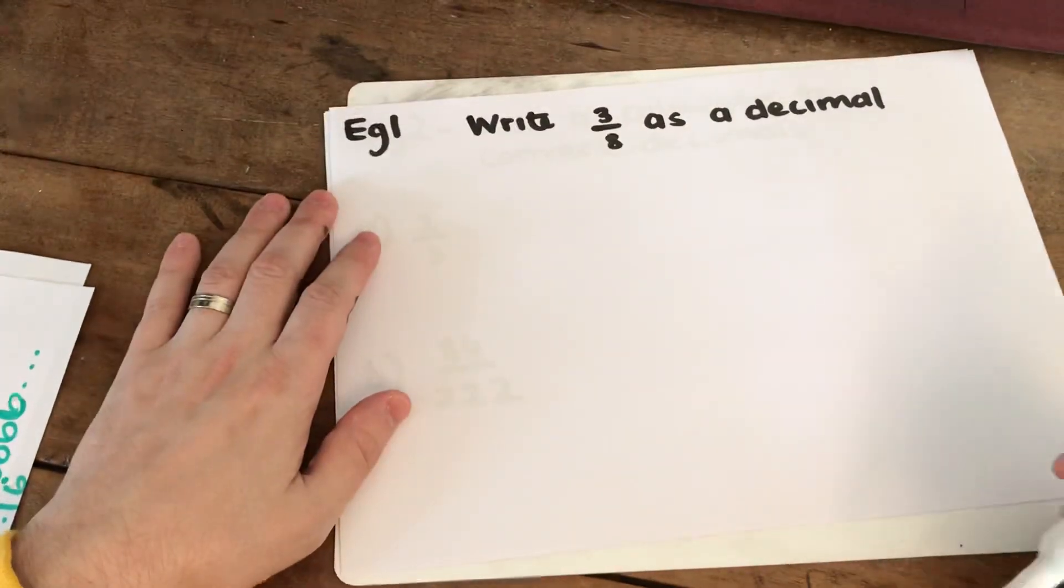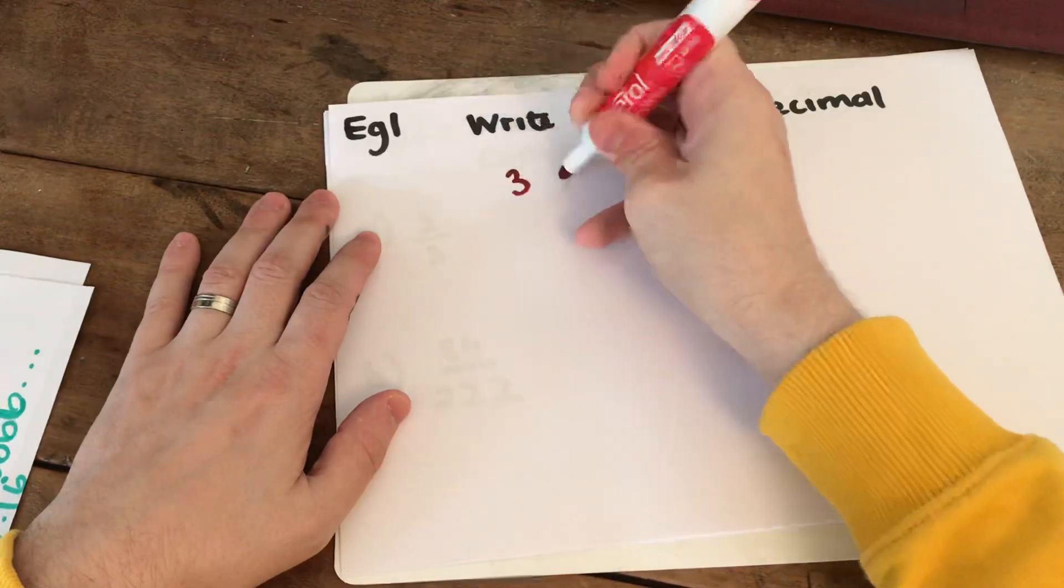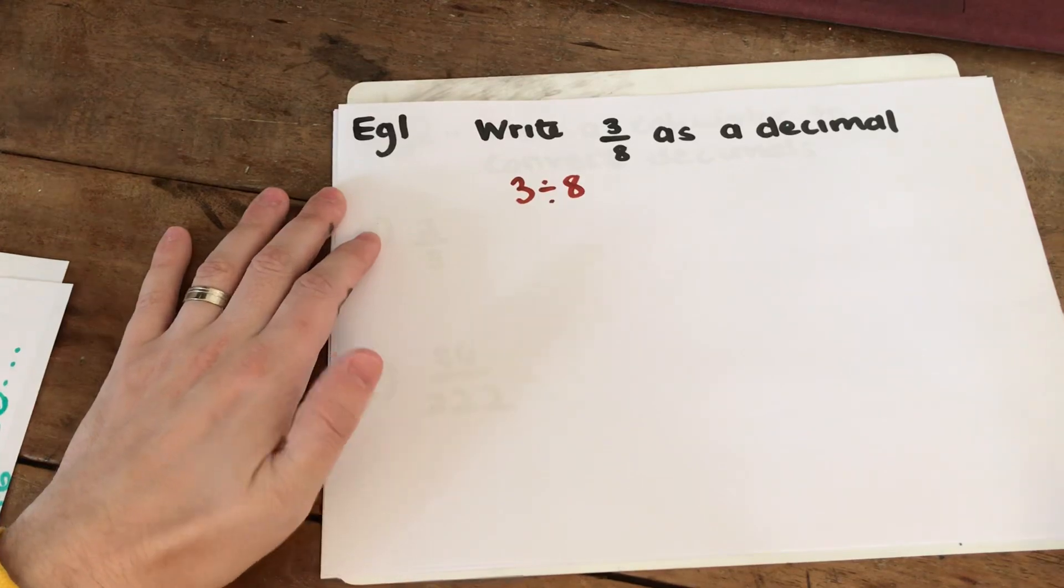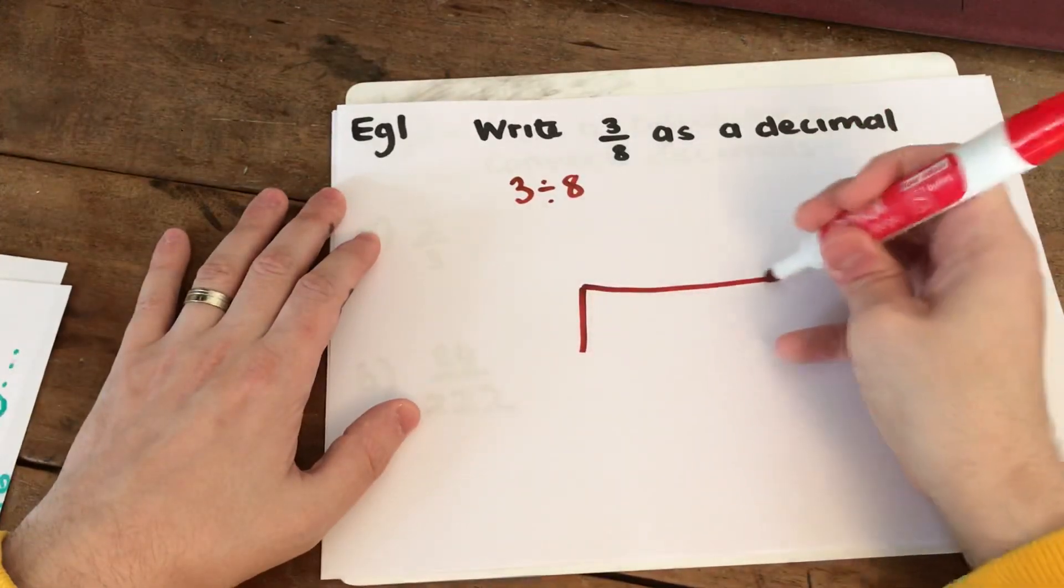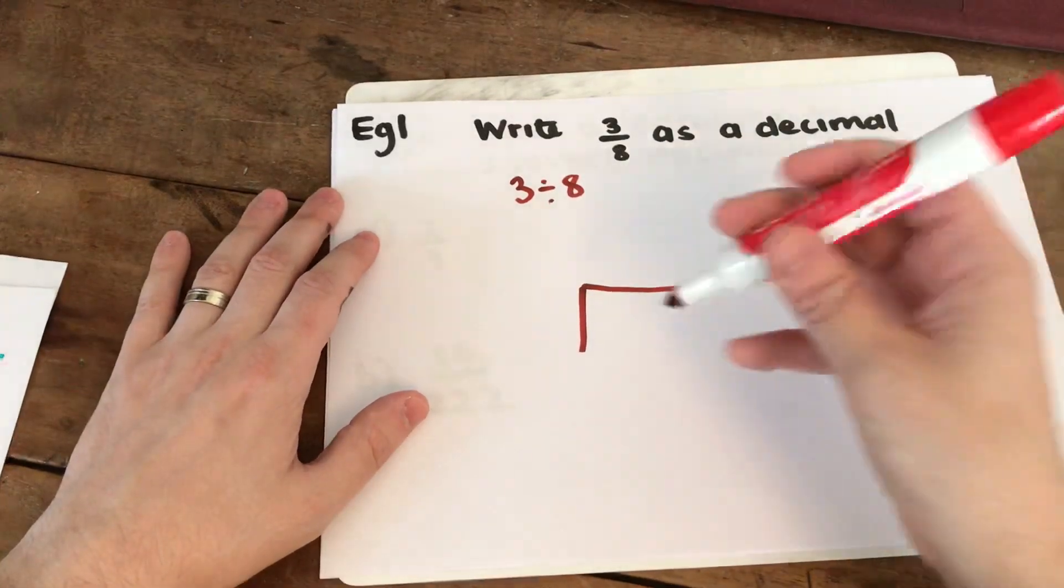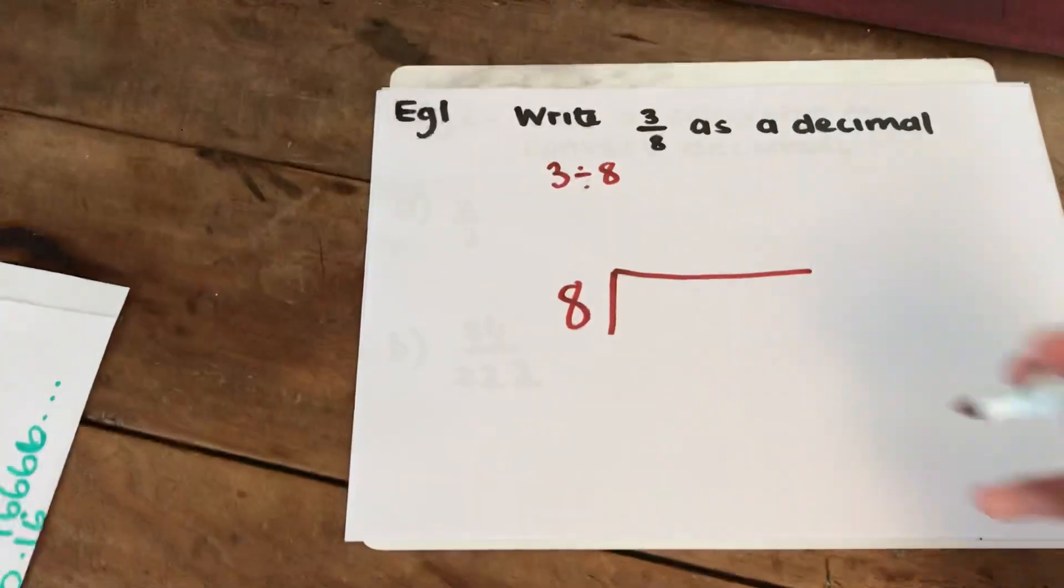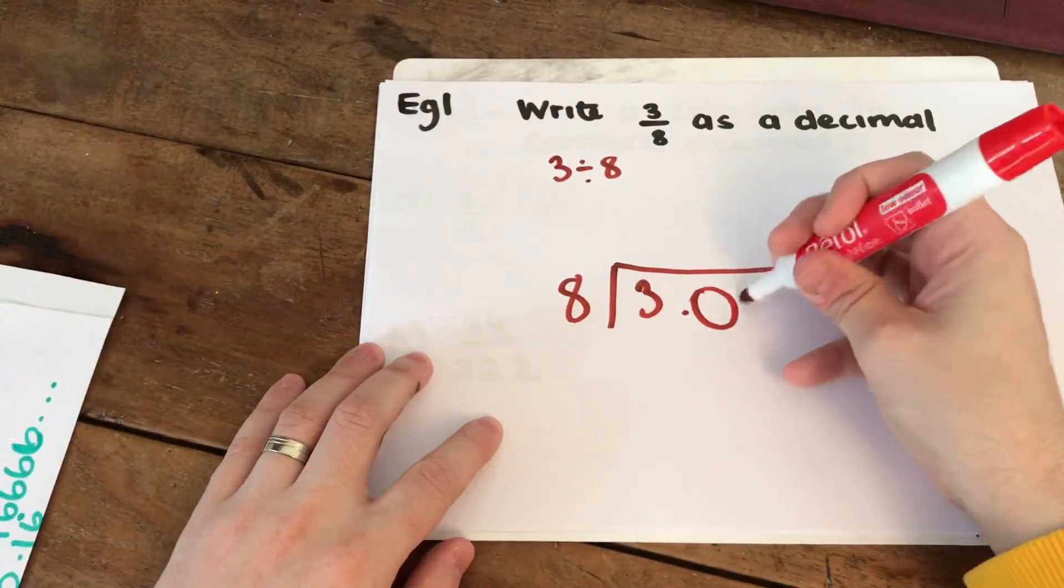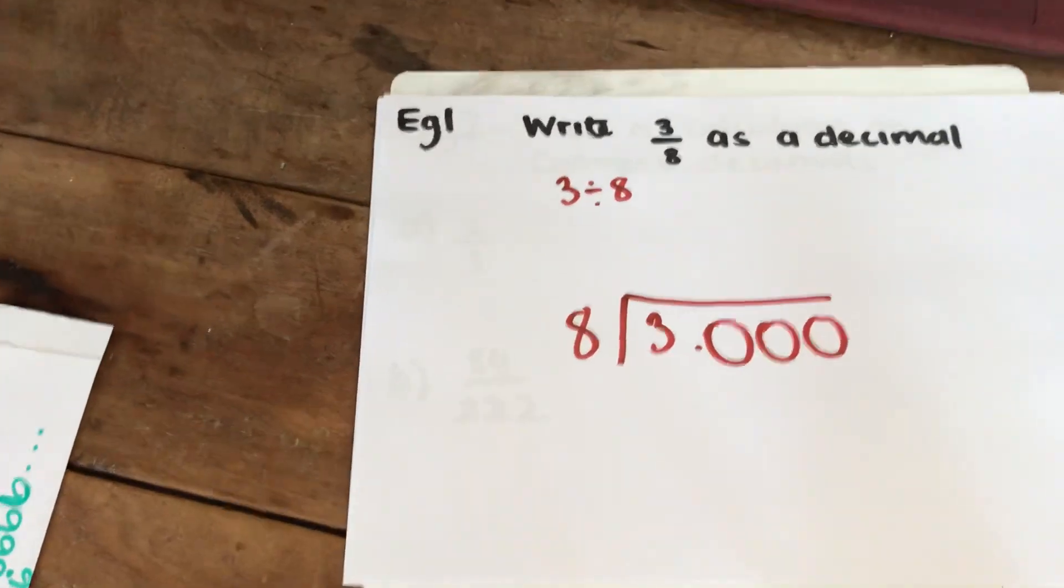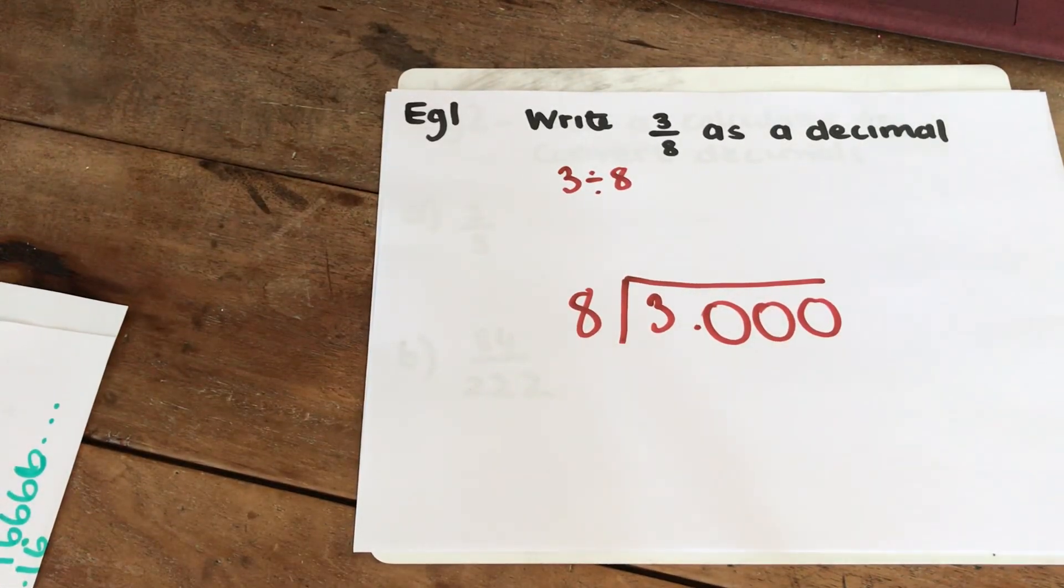Writing a fraction as a decimal. You could use your calculator and write 3 divided by 8. But some questions will ask you to use division and the bus stop method. To do this, we put 8 on the outside and 3 on the inside. We then fill in zeros. I've put 3 zeros down but you can put more or less. You just end when you don't get any more remainders.